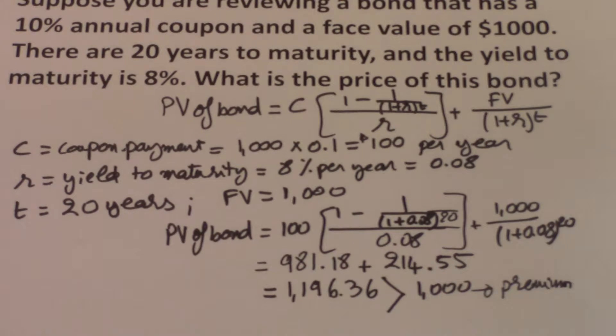The current yield to maturity is basically the coupon rate that is demanded on bonds with similar risk currently in the market. And the current yield to maturity is 8%, meaning that bonds with similar characteristics are currently paying 8%. 8% times $1,000, that is $80.